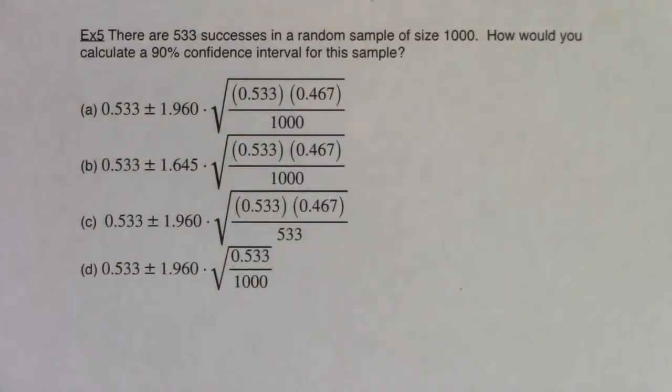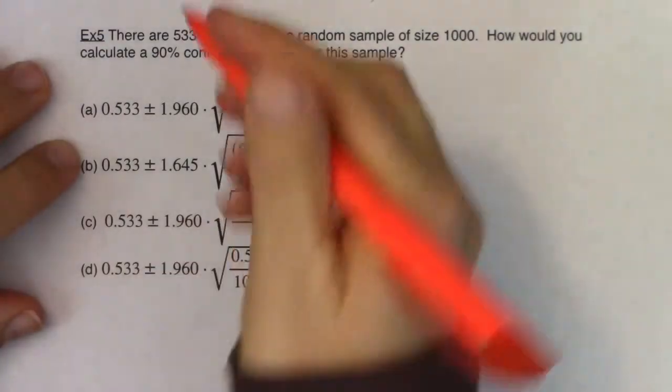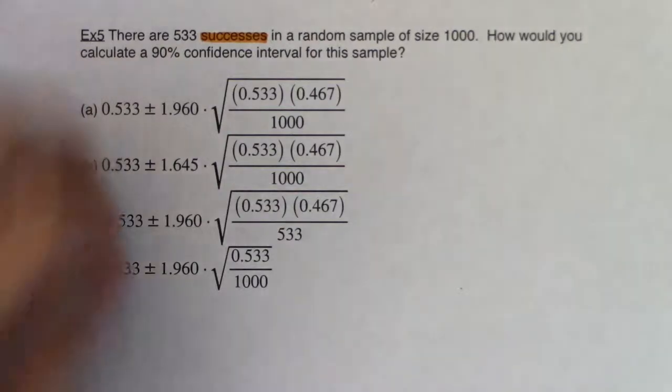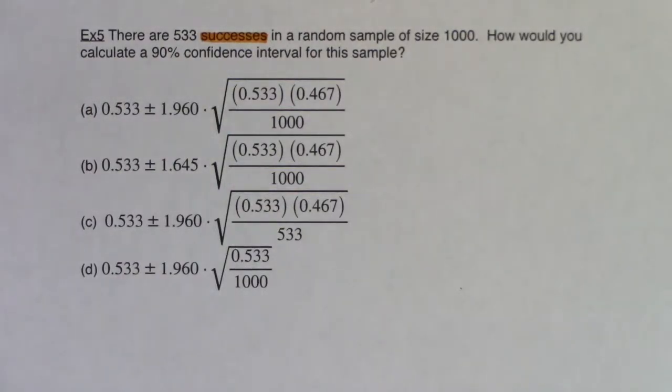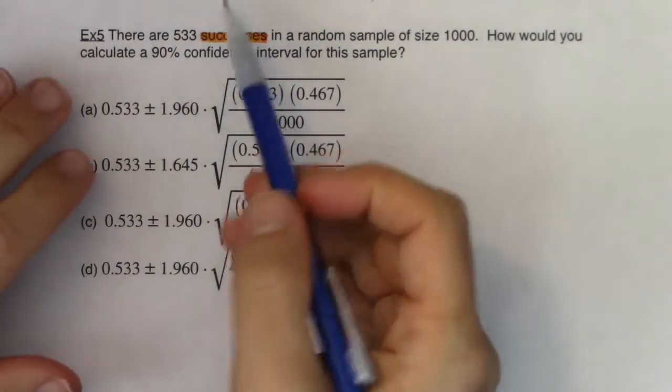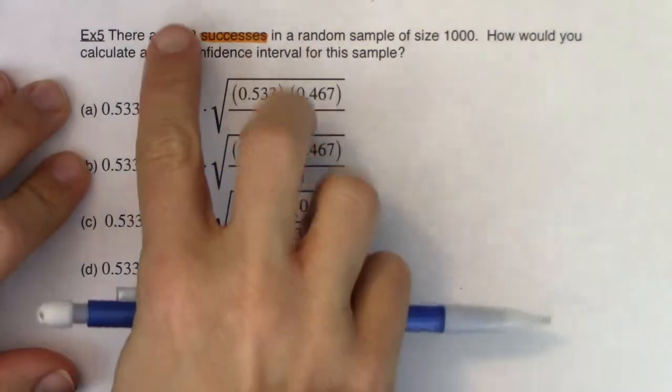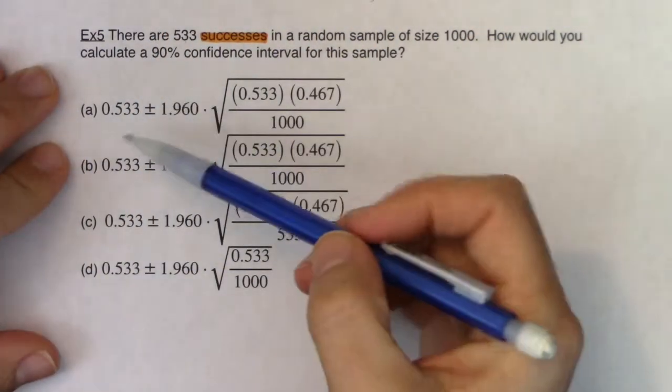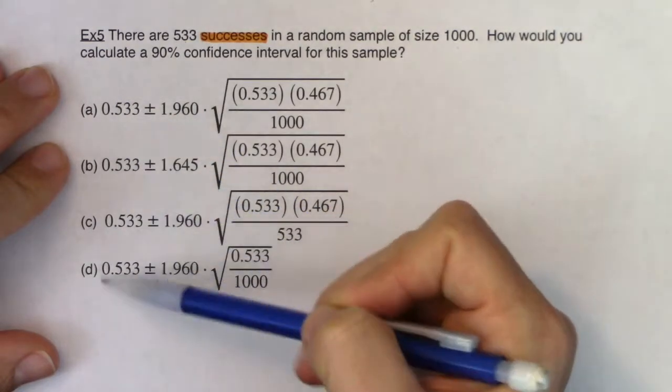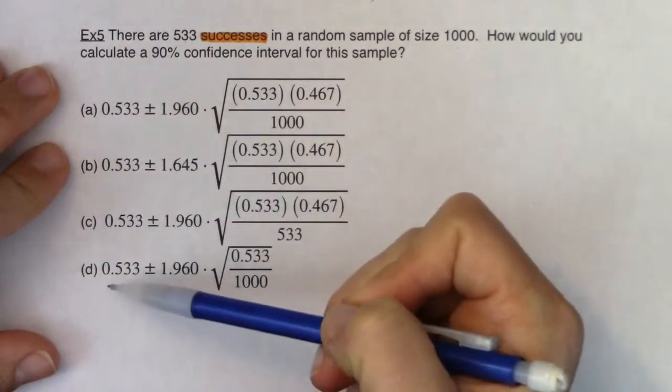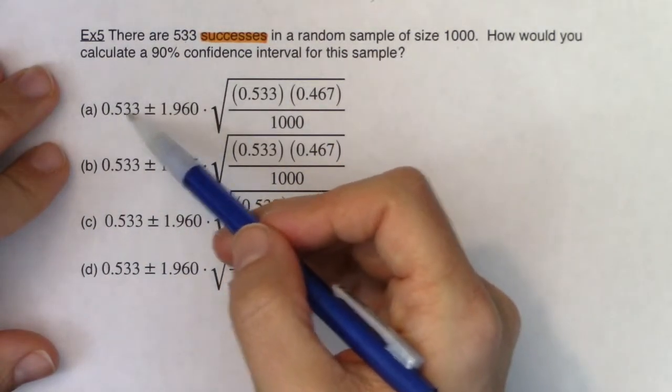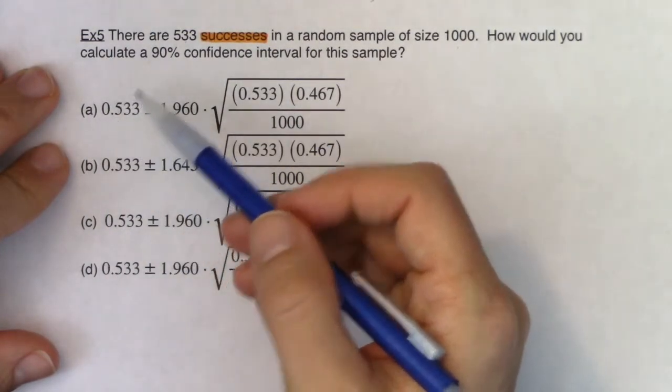It's not really giving anything away other than this word that says successes. So you know we're keeping some kind of frequency count. And whenever we have frequencies, we're going to turn those into proportions. And I can hear 533 out of 1,000. You can almost hear the sample proportion in there.